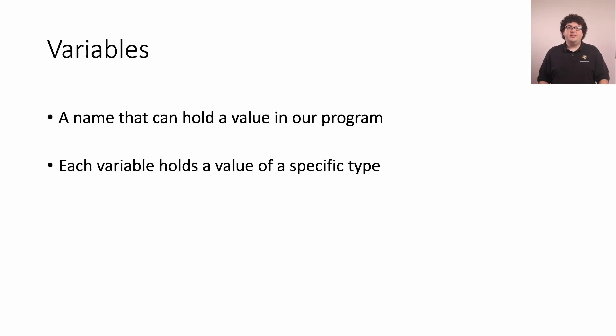One of the core building blocks of programming is variables. A variable is a name in our program that can hold values. In C++, every variable has an associated type and can hold only values of that type.